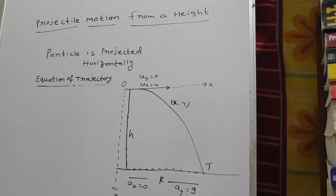Projectile motion from a height. The particle is projected horizontally. Here we are going to find equation of trajectory.